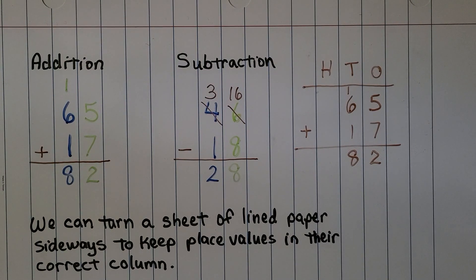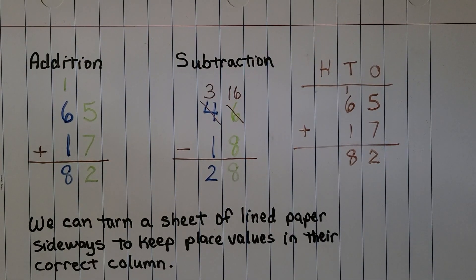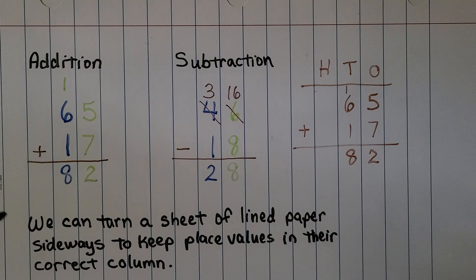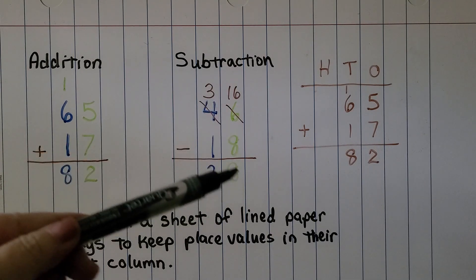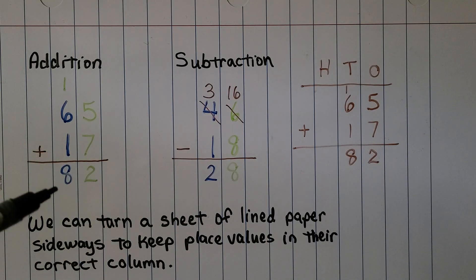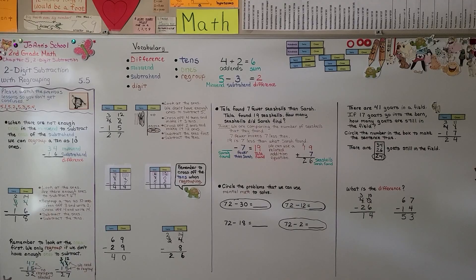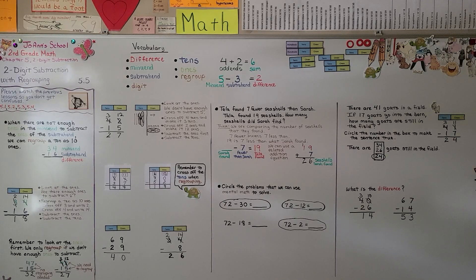For those who haven't seen this before: we can turn a sheet of lined paper sideways to keep place values in their correct column. That way, when we are regrouping, we keep our digits in their correct place value — it even works with regrouping for addition. We're going to continue doing two-digit subtraction with regrouping. Our next lesson, 5.6, is more practice. I hope you'll join me there, and I hope you have a wonderful day. Bye!